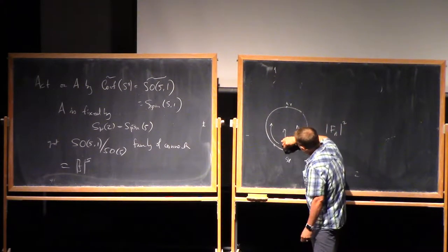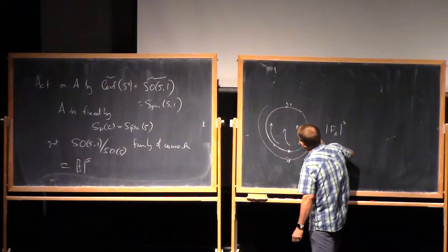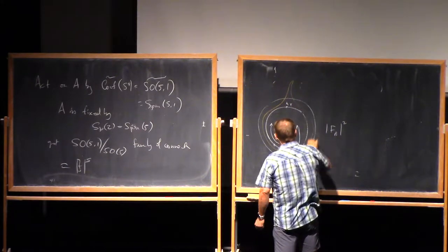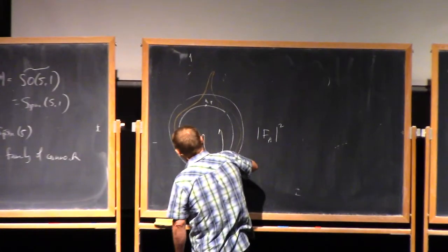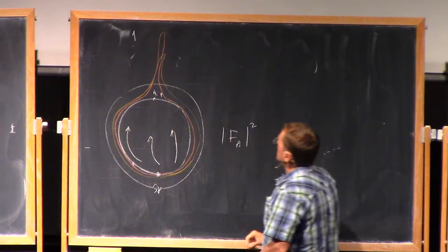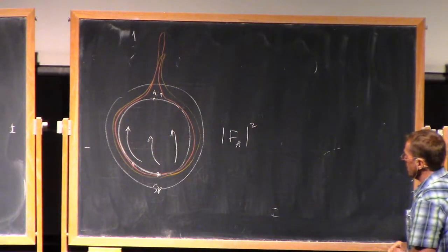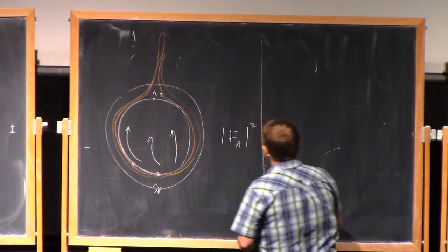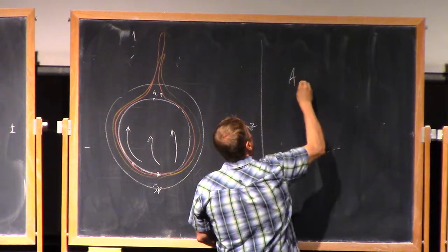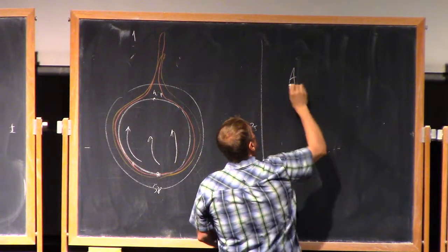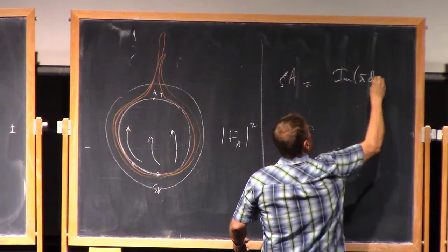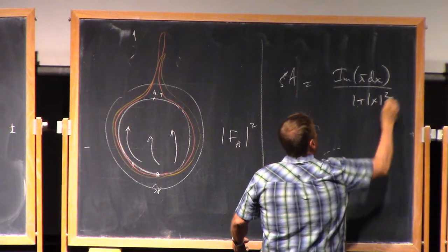But these conformal transformations, what they do is they take this guy and they start to pile it up. So the curvature starts to pile up at a point. And in fact, you can show that the, in some trivialization, this connection is given by this formula.